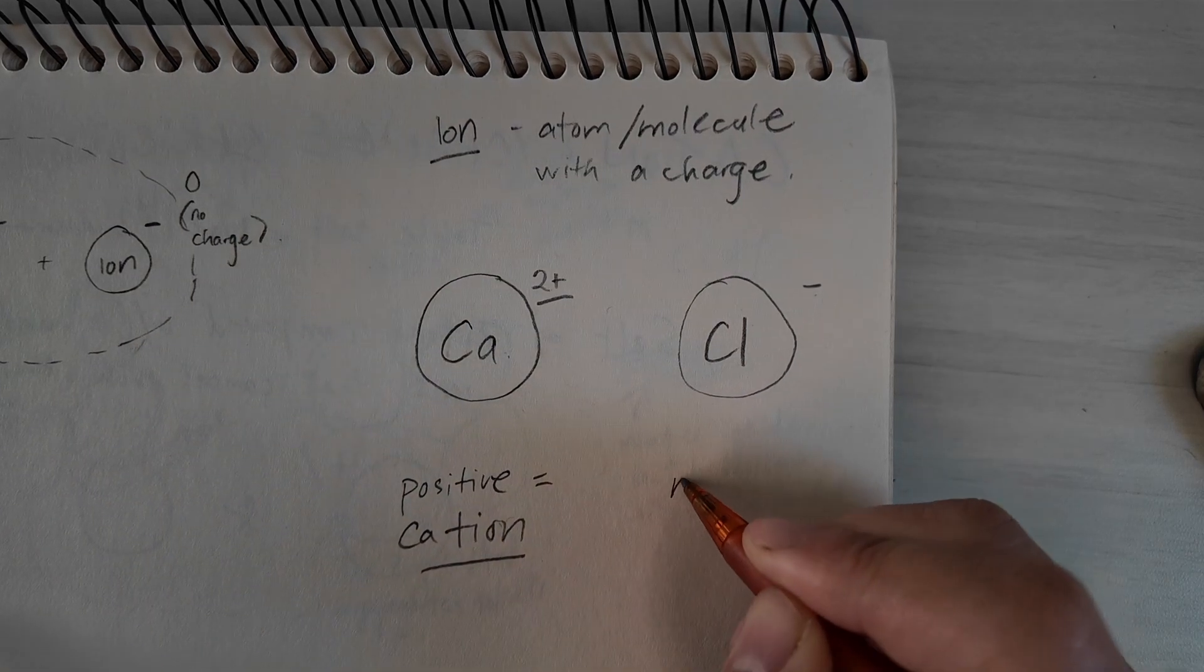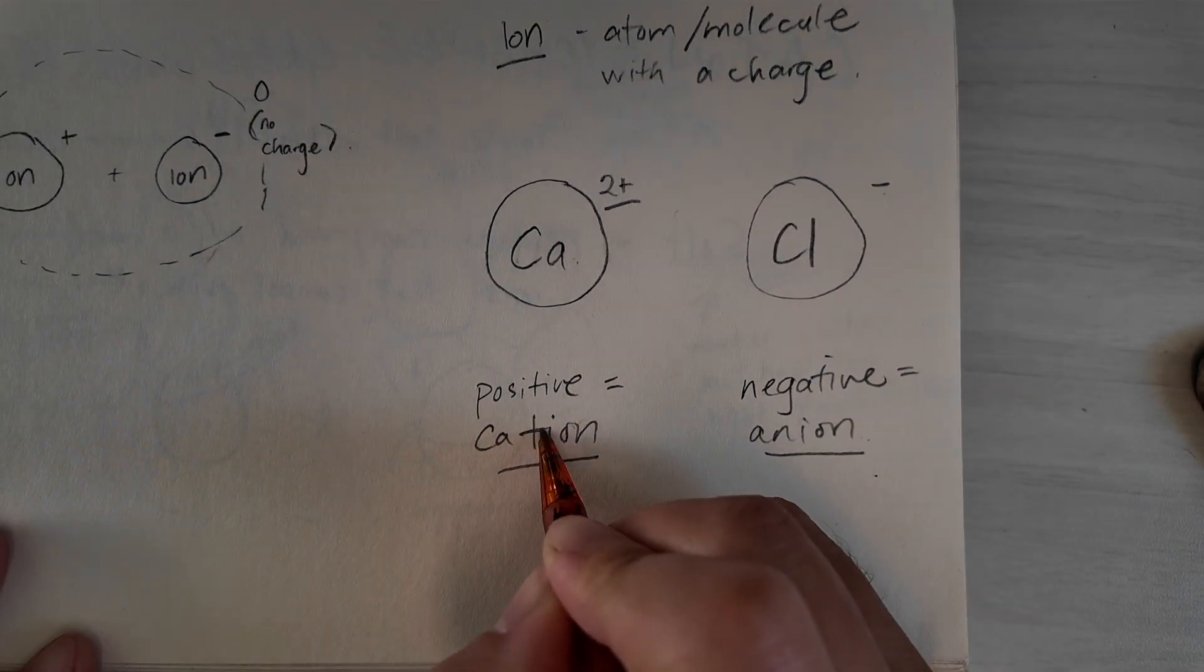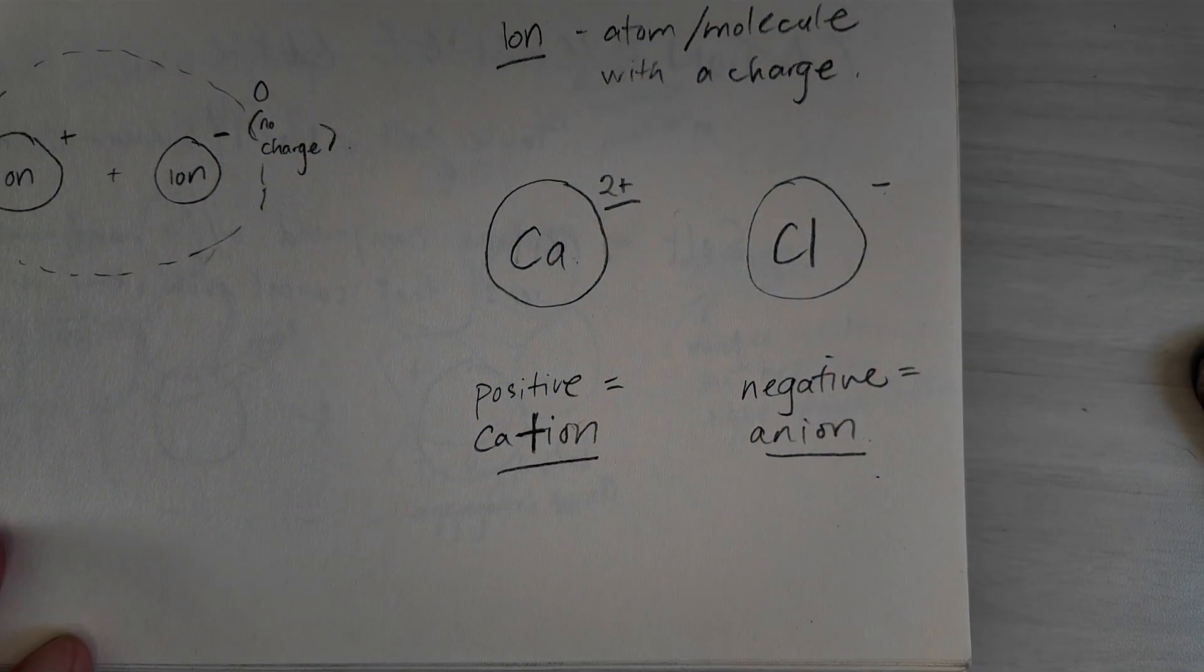If you have difficulty remembering, cation has a T in it. A T looks like a plus symbol, and it's positively charged.